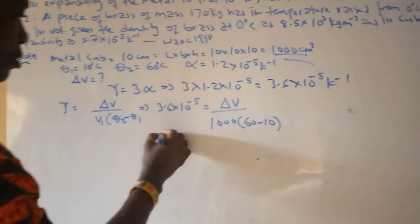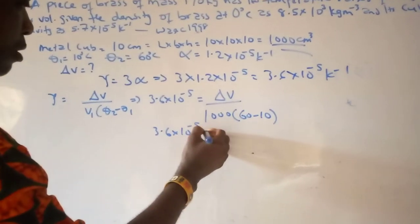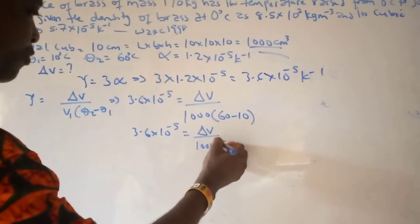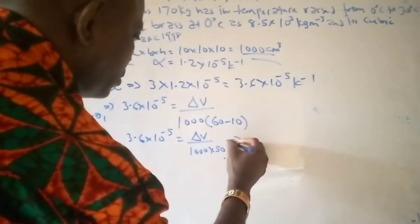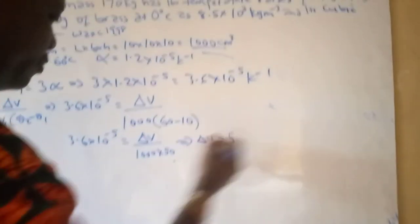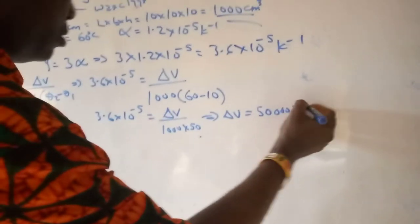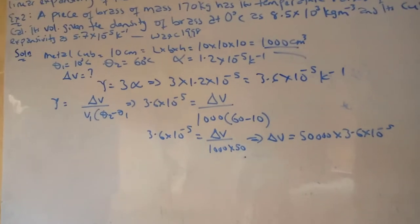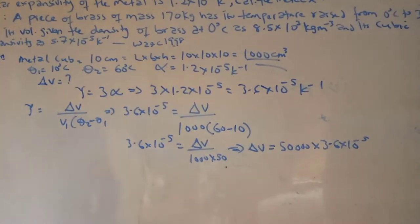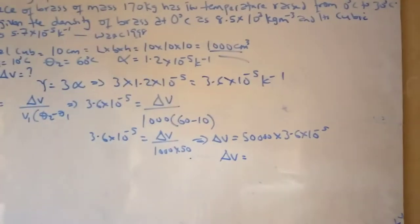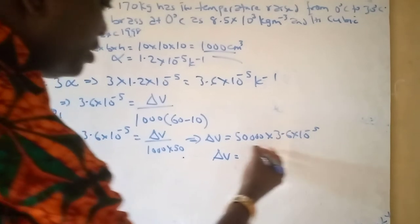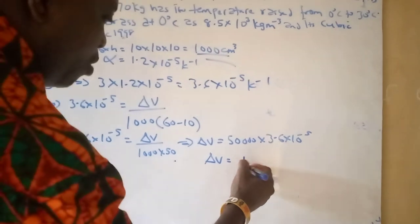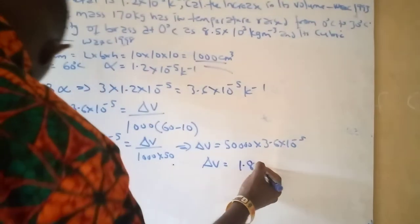So from here we can write: 3.6 × 10⁻⁵ equals increase in volume over 1000 times 50. So increase in volume will become 50,000 × 3.6 × 10⁻⁵. When you multiply this together, the increase in volume is 1.8 cm³.